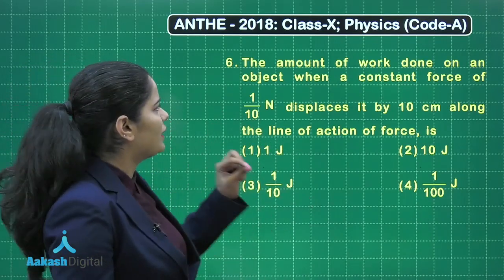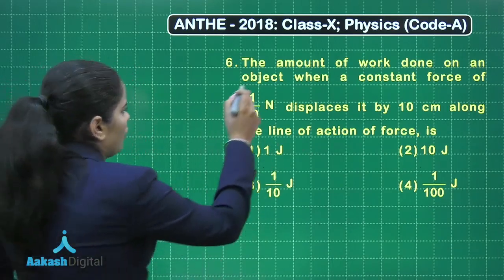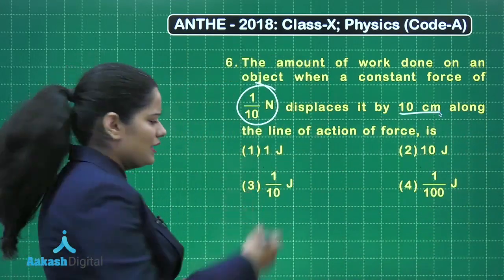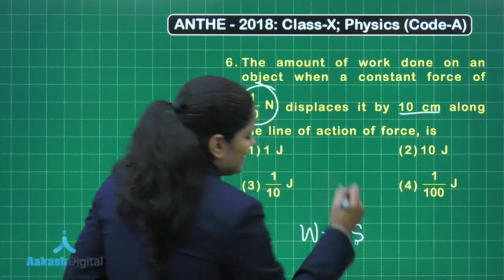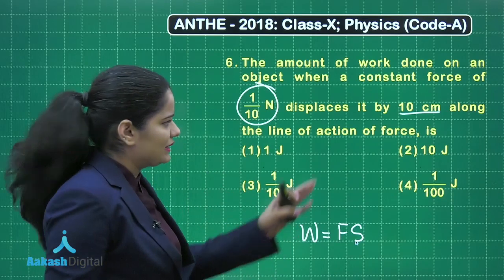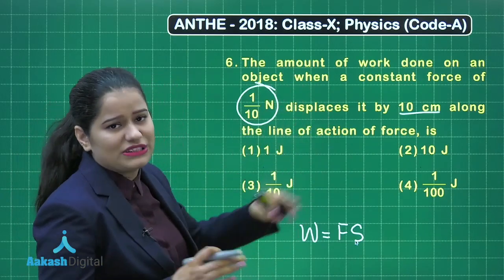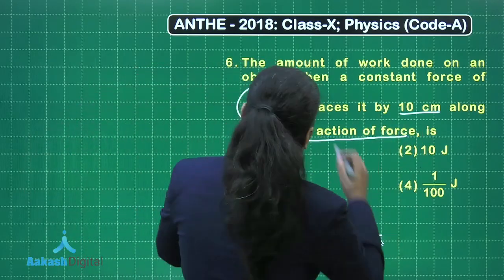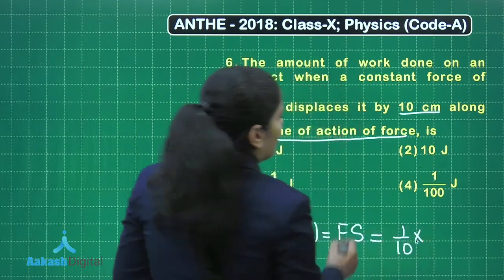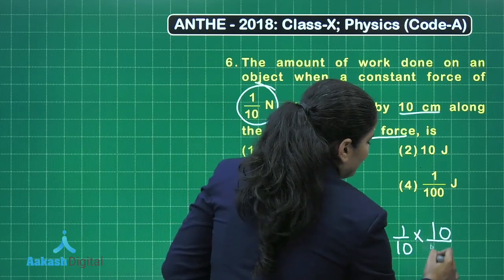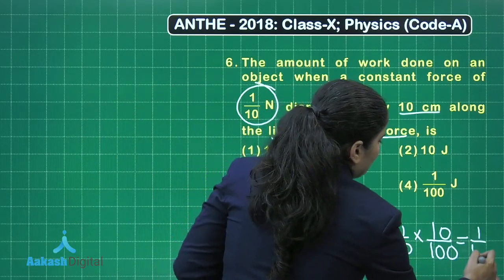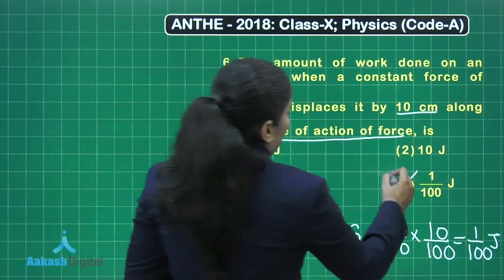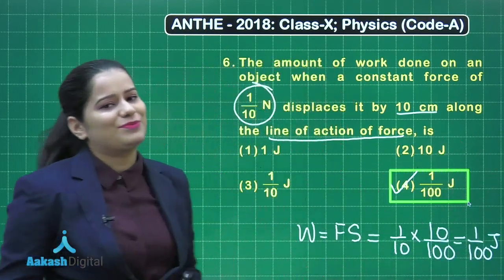The question says: find the amount of work done on an object when a constant force of 1/10 Newton displaces it by 10 centimeters along the line of action of force. Using the formula W = F × S × cos θ, and since the force acts along the line of action, this simplifies to W = F × S = (1/10) × (10/100) = 1/100 joule. So option 4 is the correct answer. I hope this question is clear. Let's move on to the next question.